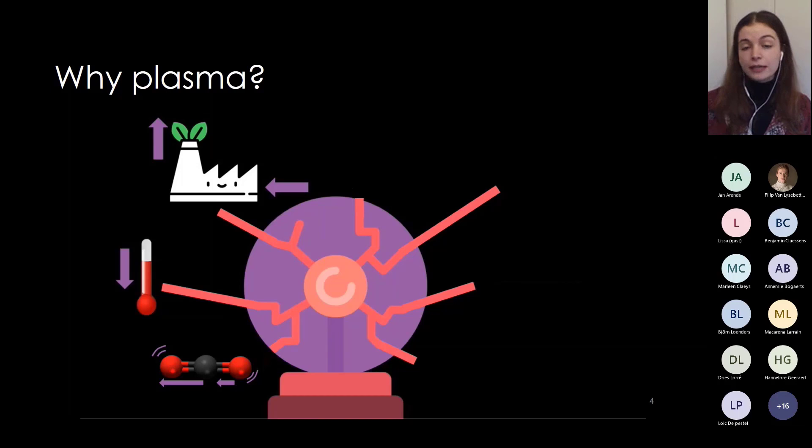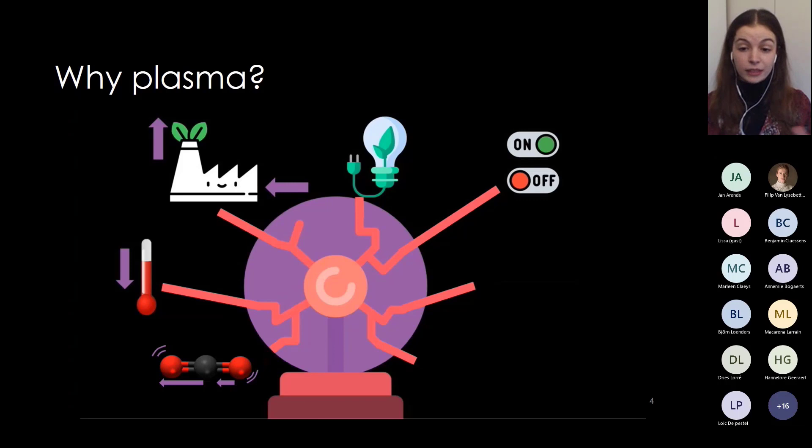It's also a very flexible technology. You can modify both your input gases or your feedstock and your products depending on the needs of the process. And of course, a plasma runs on electricity so this can help us get rid of our fossil fuel dependence. In addition to that, it's a technology that is easily switched on and off, which makes it easier to compare with renewable electricity.